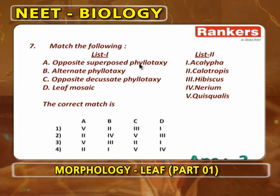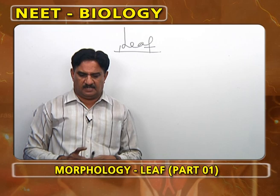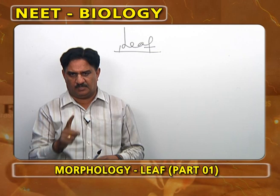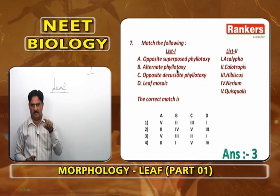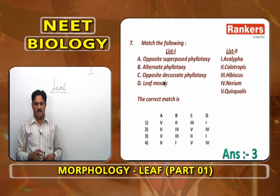This is a matching question on phyllotaxy. Opposite superposed phyllotaxy means opposite leaves are present one above the other regularly — example is Quisqualis. Alternate phyllotaxy means at each node there is only one leaf, arranged alternately or spirally at different nodes — example is Hibiscus.